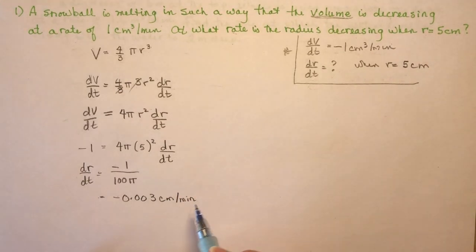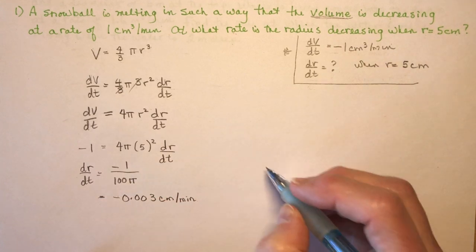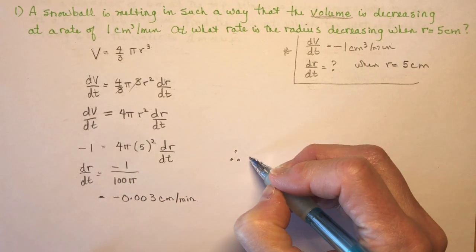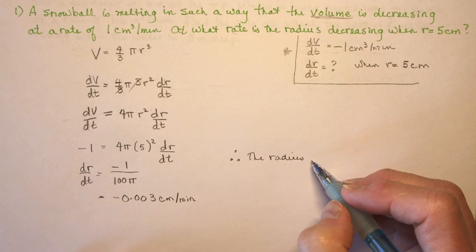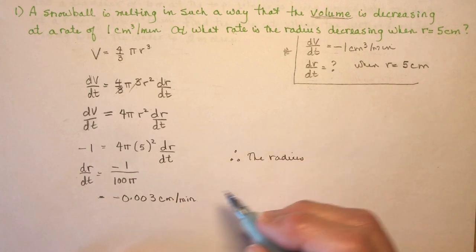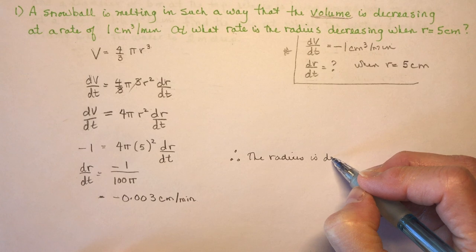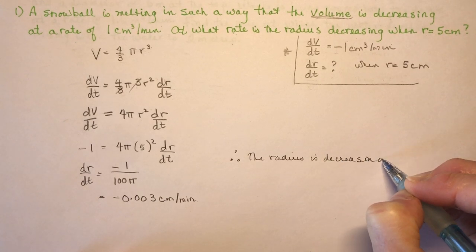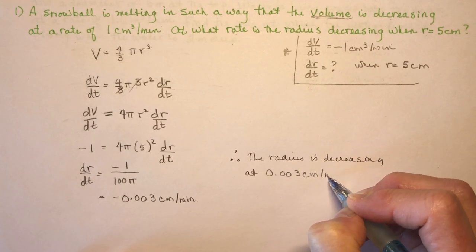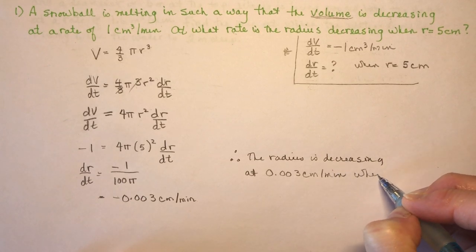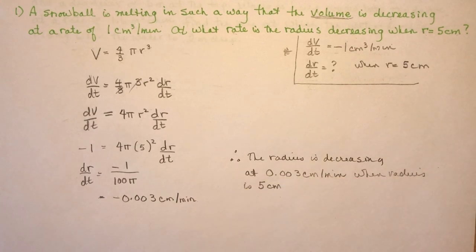Some teachers don't like you to put units in your calculation, but you should still have a concluding statement. You have two ways to write this: either say the radius is changing at minus 0.003 centimeters per minute, or if you use the word 'decreasing' you don't need the negative — so the radius is decreasing at 0.003 centimeters per minute when the radius is five centimeters. That's your first question — the snowball melting — could be a balloon being blown up or all sorts of things.